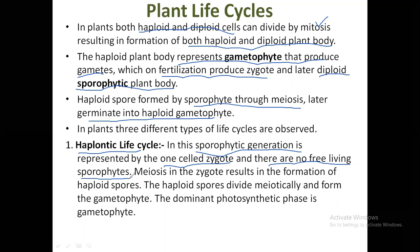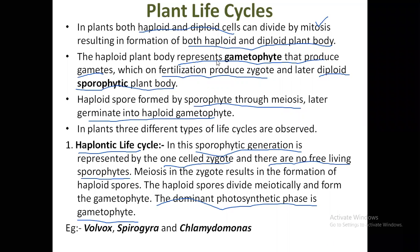Meiosis in the zygote results in the formation of haploid spores. These haploid spores divide mitotically to form the gametophyte, and this gametophytic stage is actually the dominant photosynthetic phase in this kind of plant. So the dominant phase is the gametophyte — if the dominant phase is gametophyte, the life cycle is called haplontic. Common examples include Volvox, Spirogyra, and Chlamydomonas.